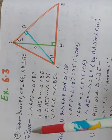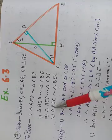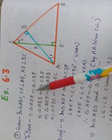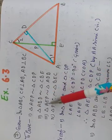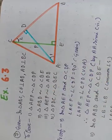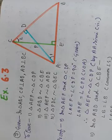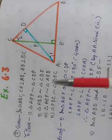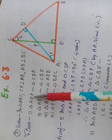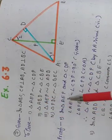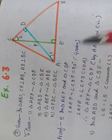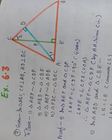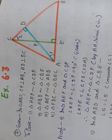We have to prove four parts — every time it is asking that two triangles are similar. So just check which two triangles are being asked. The first part asks about triangles AEP and CDP. First, you check where AEP and CDP are.